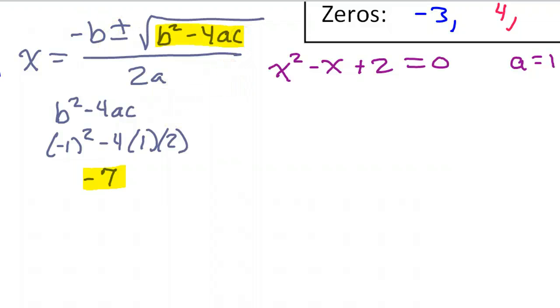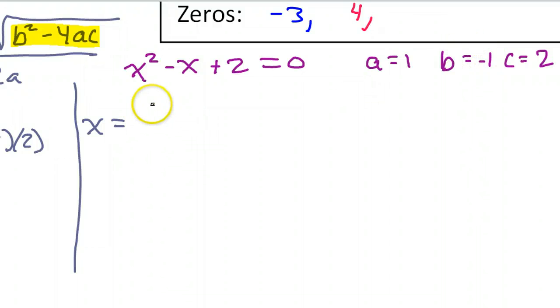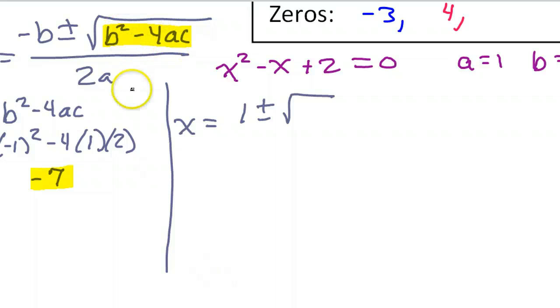I have negative 7. Now understand that this negative 7 is the b squared minus 4ac. So if I go ahead and continue with my quadratic formula, it's going to look like this. Opposite of b, and again b is negative 1, so opposite of b is positive 1. Plus or minus square root. Now the b squared minus 4ac, we calculated that and it was negative 7. So I can just go ahead and put negative 7 here. All over 2a. Well 2a, that's 2 times 1, so that's just 2.